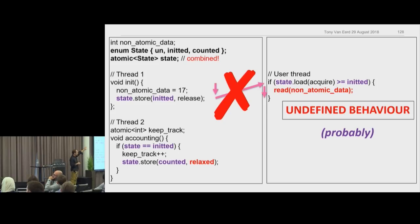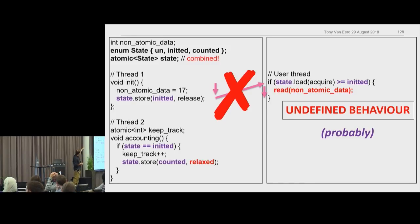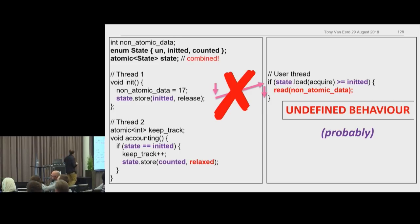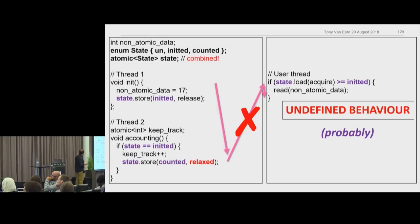The way I think about it: imagine these are separate computers across the internet. Thread one is in Japan, thread two is in Australia, thread three is in Seattle. The message got from Japan to Australia, then from Australia to Seattle — but the message that got to Seattle was just that it's been counted, not the rest of the message that the atomic data was set. The data was only sent to Japan. So yes, this is undefined behavior. When I first looked at it, I thought it made complete sense — and then: oh wait, this doesn't make sense in this crazy world of threading and lock-free programming.